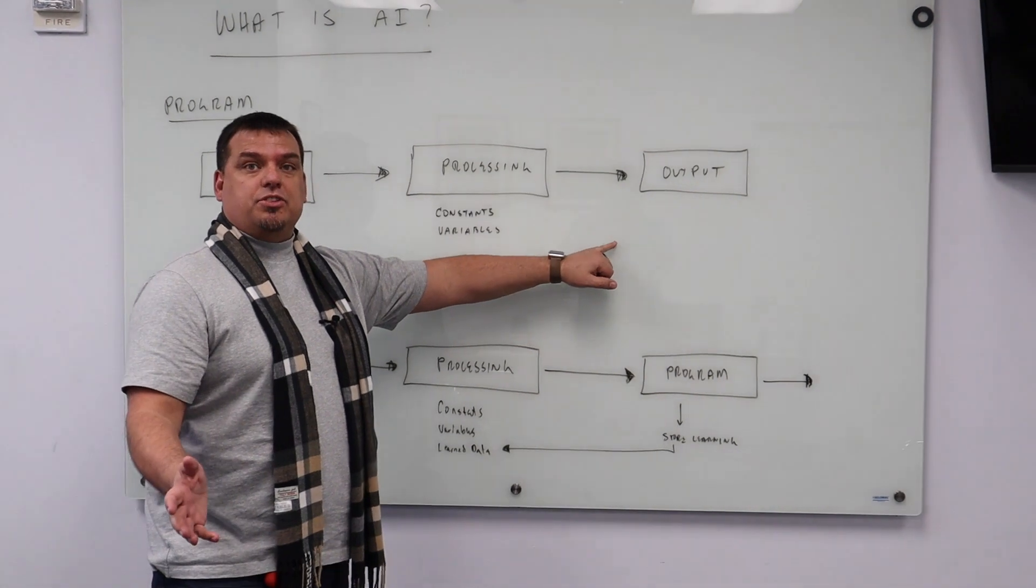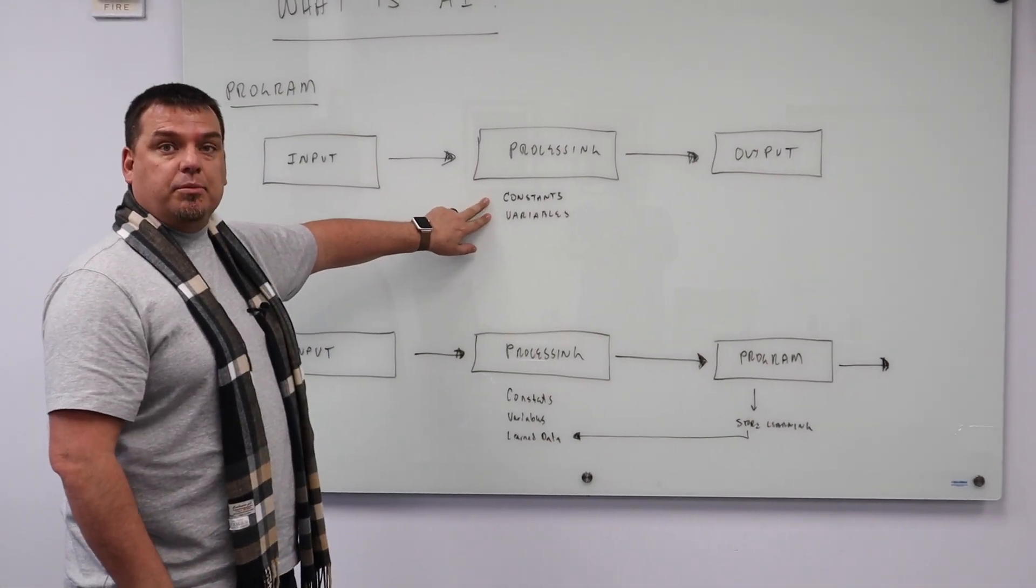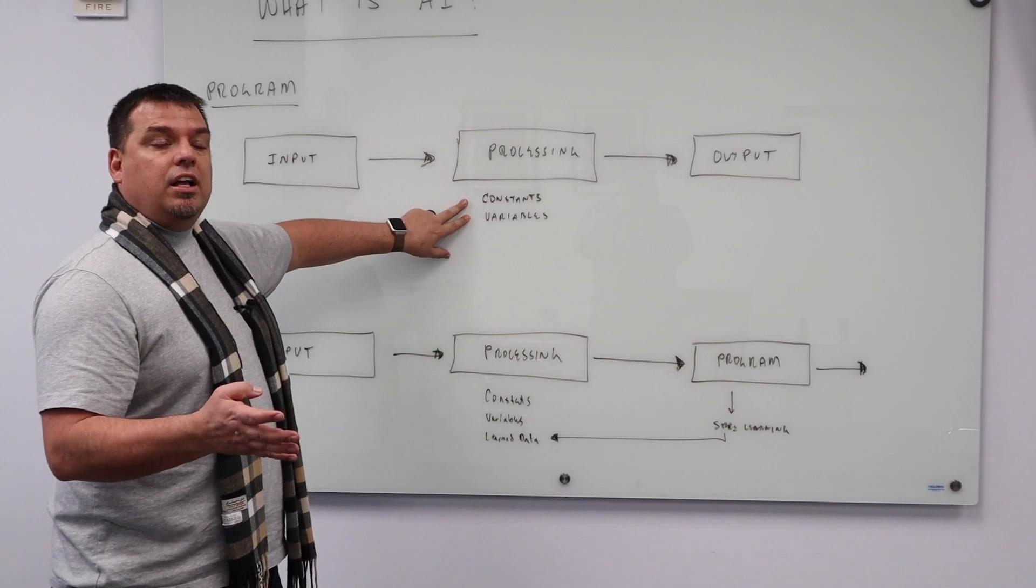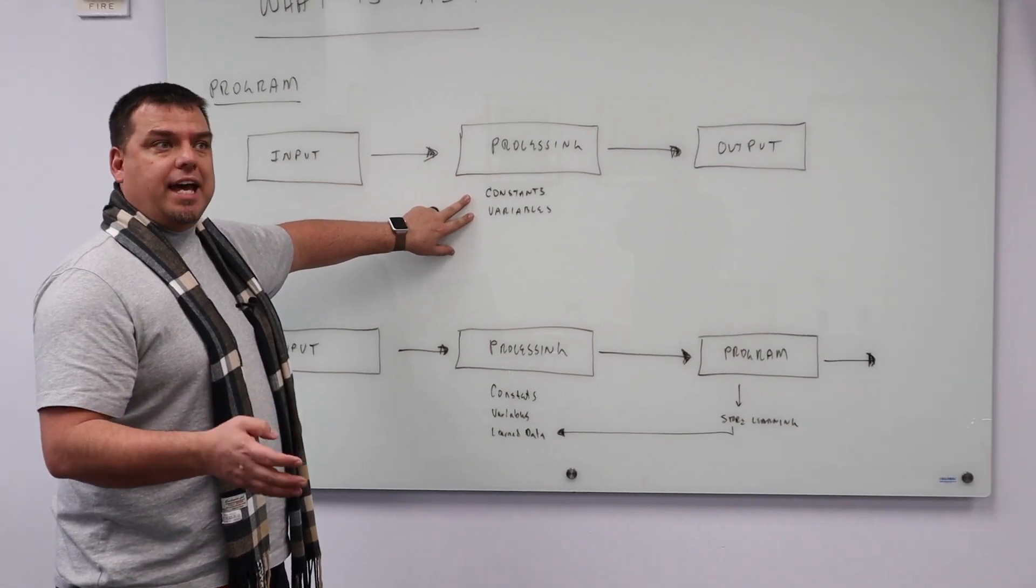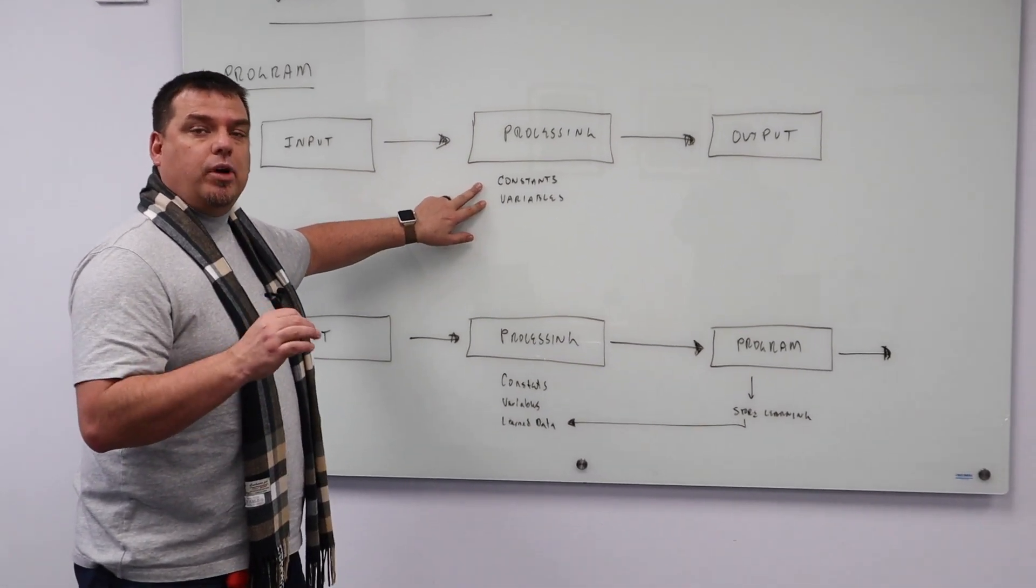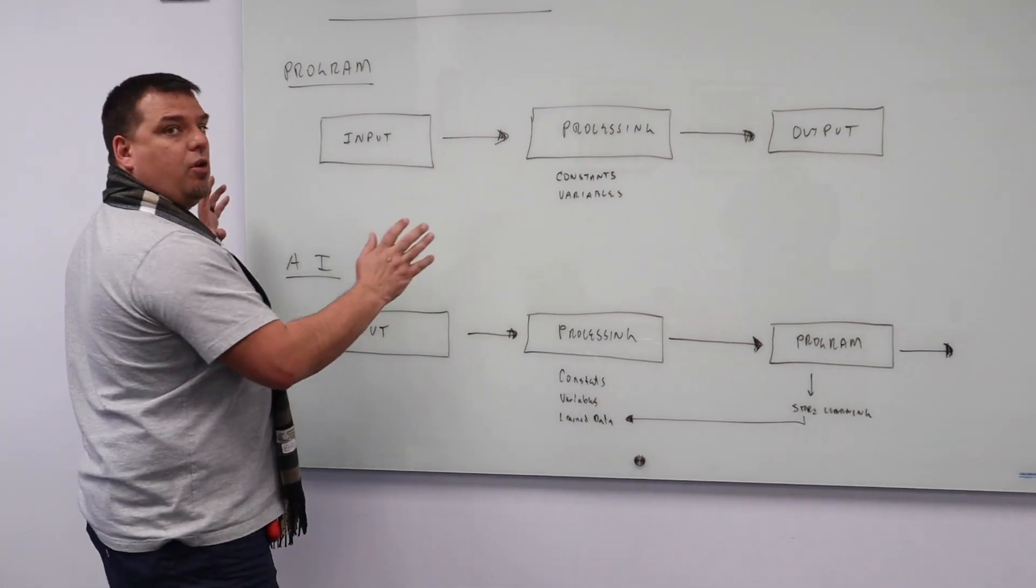The output is generally the return. The processing generally only uses constants and variables. And those variables are almost always linear. That is, they are coming from a discrete point that we are processing. That is a basic program.